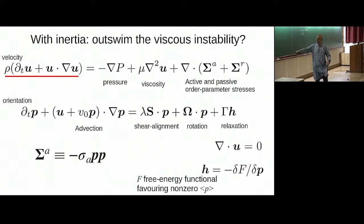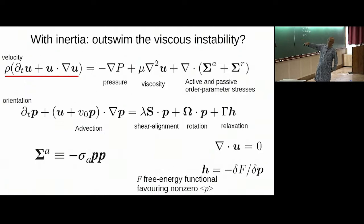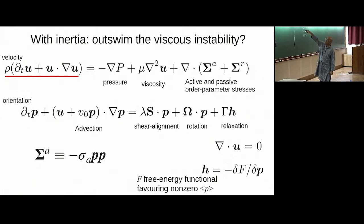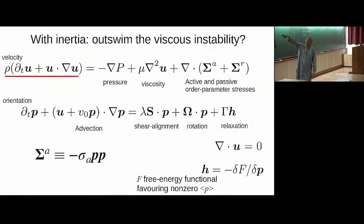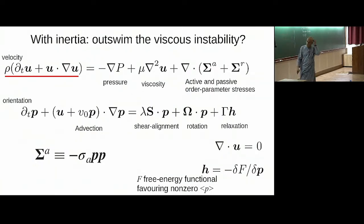There is a free energy functional that favors orientational order. Swimmers create stresses that at the simplest level are bilinear in the orientation order parameter — the active stress sigma_A. There are also stresses from liquid crystalline mechanics, viscosity, and pressure. We keep track of the fact that the fluid has a mass density, so inertia matters. Over the range we study, the nonlinear flow terms don't matter — we linearize the Navier-Stokes equation.